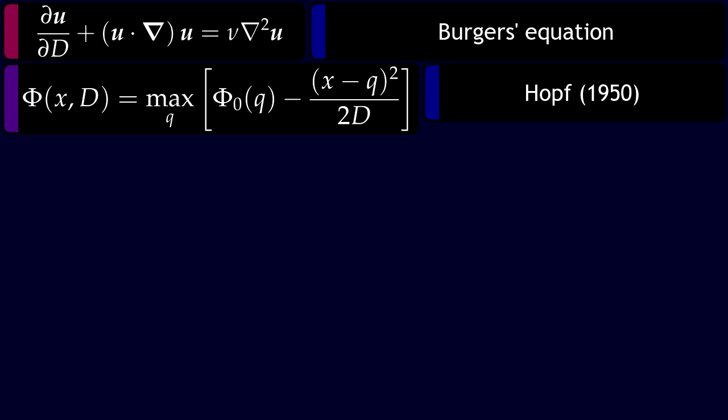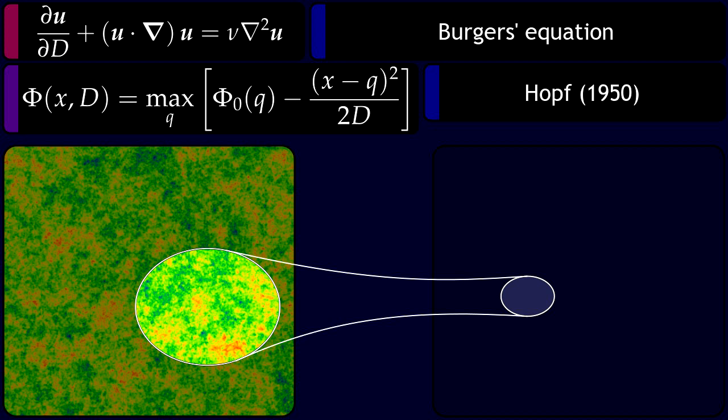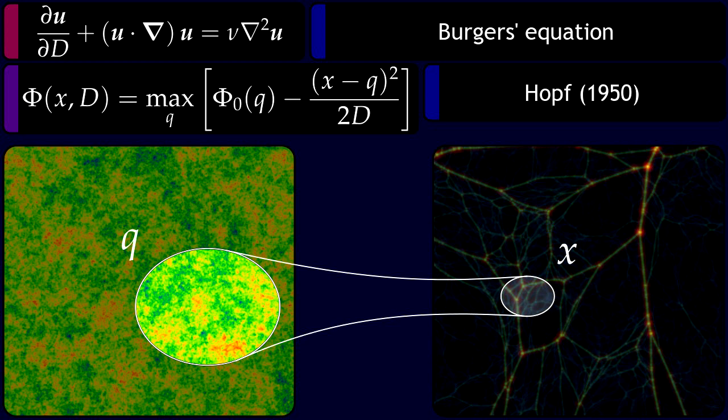The global optimization induces a mapping of the primordial mass distribution in the so-called Lagrangian space, Q, to the evolving density field in Eulerian space, X. It describes how a mass element Q moves towards its location X at time t.